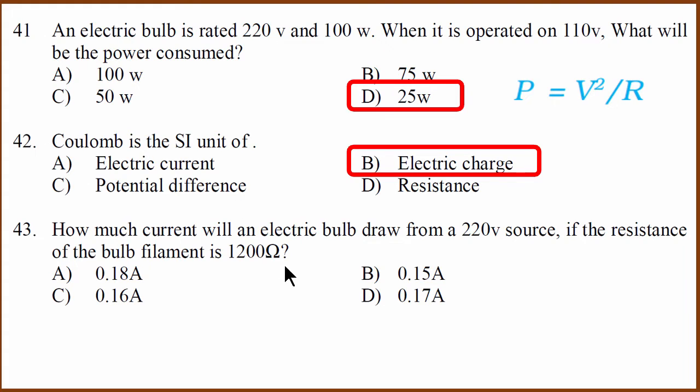Third question is an Ohm's law question. We have an electric bulb connected to 220 volt source and its resistance is 1200 ohms. How much current does it draw? V is equal to IR, so I equals V divided by R. If you substitute the values, 220 by 1200, you get 0.18 ampere.